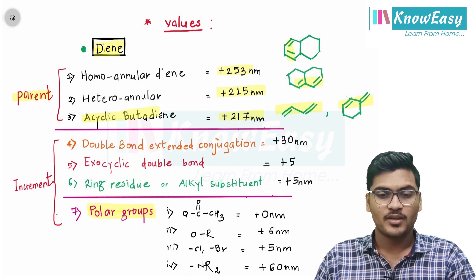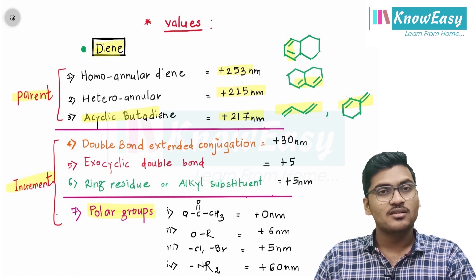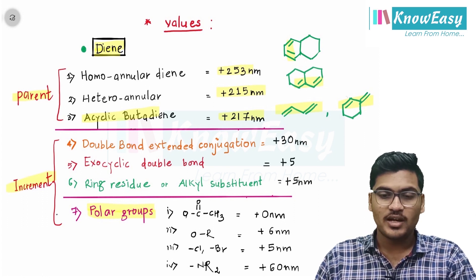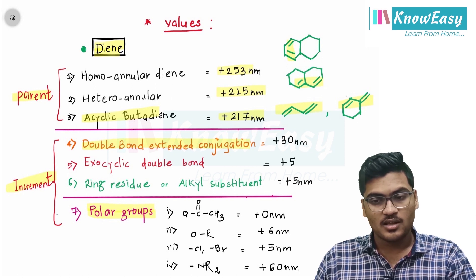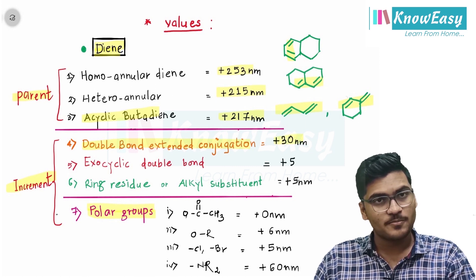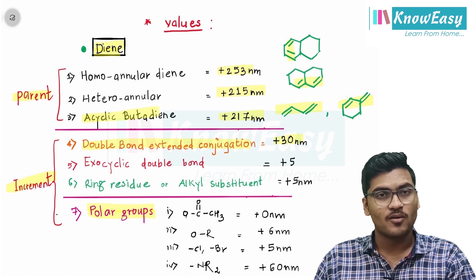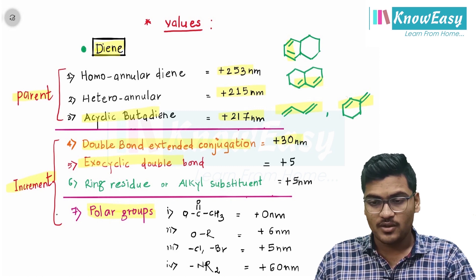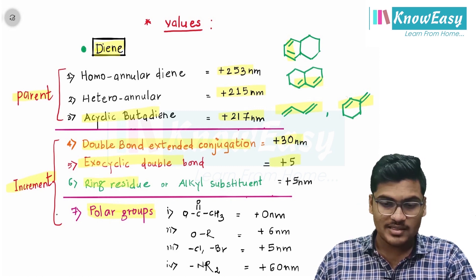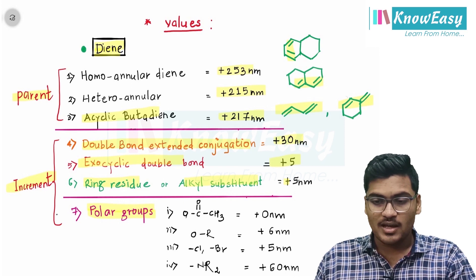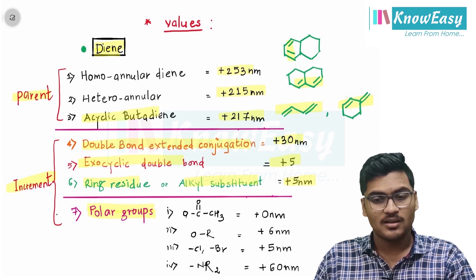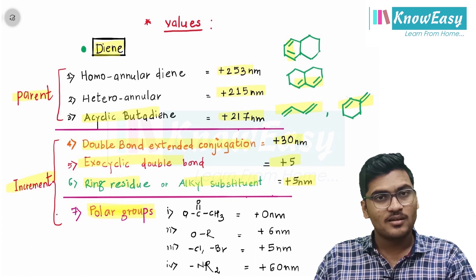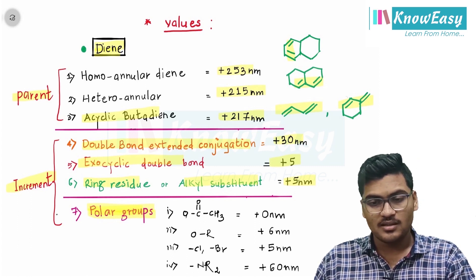Now for increments — that means contributions — we know that a double bond extending conjugation has a value of plus 30 nanometers. We have already seen how to identify double bond extending conjugation. There is also an exocyclic double bond with a value of plus 5 nanometers. A ring residue or alkyl substituent both have a value of plus 5 nanometers. If instead of alkyl, different polar groups are substituents on your system, then they have their respective values.